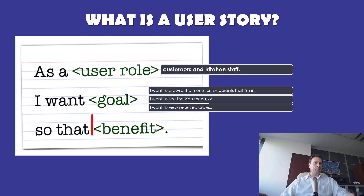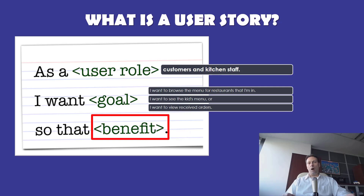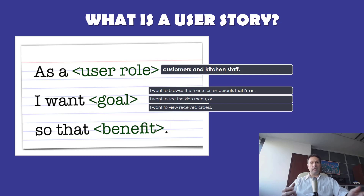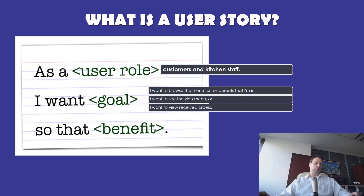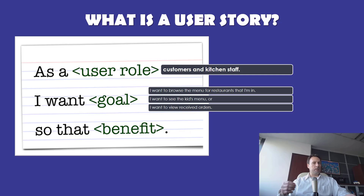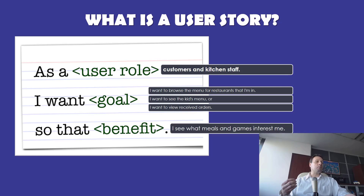The final blank of the User Story specifies why the User Story is needed in the first place. This is often skipped when User Stories are created, but it offers key insight into the requirement. It gives context about the value or benefit the requirement offers, which aligns with the product's goal or vision — it specifies the why. A full User Story might look like: as a child customer, I want to see the kids menu, so that I can see what meals and games interest me.